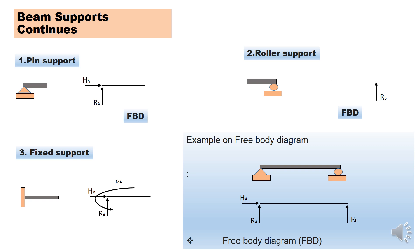Now we have beam supports. Let's look at it in detail. The first one is pin support. For pin supports, the reactions that we are expecting here are vertical reactions and horizontal reactions. What it means is that there is vertical restraint, and there is also horizontal restraint. The free body diagram will have horizontal reaction and vertical reaction.